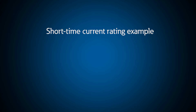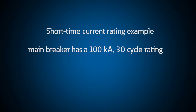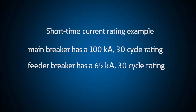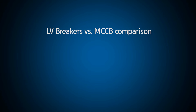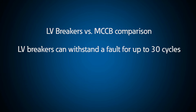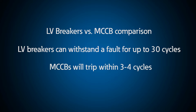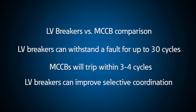For example, if the main breaker has a 100 kA 30-cycle rating but a feeder breaker has a 65 kA 30-cycle rating, the switchgear will carry a 65 kA 30-cycle short time withstand current rating. Low voltage power circuit breakers are specifically designed to withstand a fault of a given magnitude without tripping for up to 30 cycles. Compare this to molded case circuit breakers or MCCBs, which are designed to trip instantaneously within three to four cycles when subjected to fault current above the instantaneous setting. As a result, MCCBs are tested to withstand a short circuit fault for only three cycles before tripping.